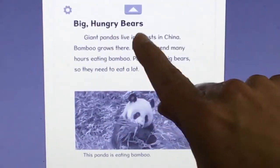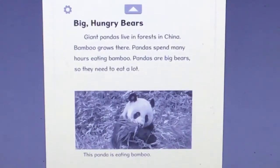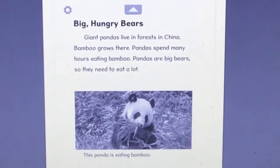Big hungry bears. Giant pandas live in forests in China. Bamboo grows there. Pandas spend many hours eating bamboo. Pandas are big bears, so they need to eat a lot. This panda is eating bamboo.